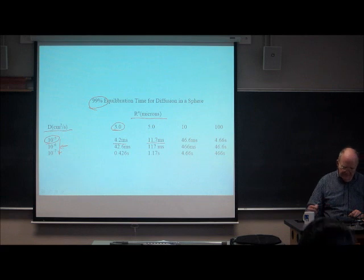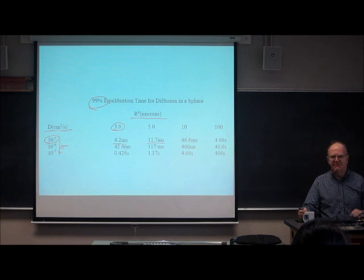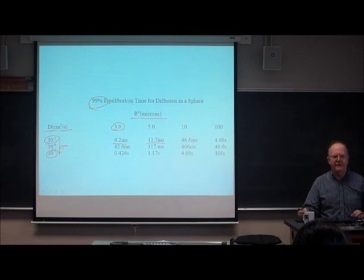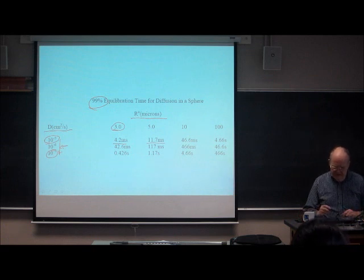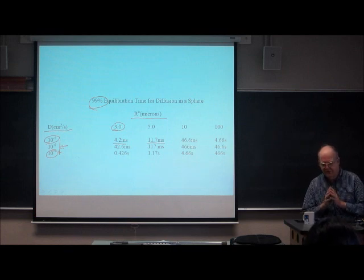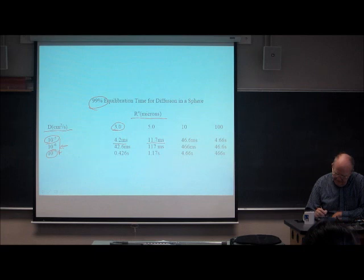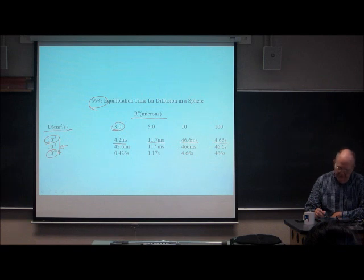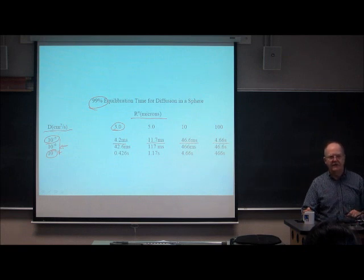The diffusion coefficient of 10⁻⁶ cm²/s would be typical of a peptide of molecular weight 5,000 daltons, and the smaller value would be more representative of a good-sized protein like serum albumin with a molecular weight of about 60,000. Both the diffusion coefficient and the particle size are very important, but the time goes with the square of the size. Going from a 10 micron to a 100 micron particle, the time goes from 46 milliseconds to 4.6 seconds — a big increase in equilibration time.